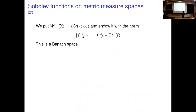Now that we have an energy, we have our Sobolev space: the space of functions in L² with finite Cheeger energy, equipped with the norm which is the L² norm plus the Cheeger energy. It is trivial to check this is a Banach space — completeness comes from the lower semicontinuity of the Cheeger energy crucially. It is not always a Hilbert space, and that has to do with the geometry: already on ℝ^d with a norm, what you come out with is a Banach space and not necessarily a Hilbert space.